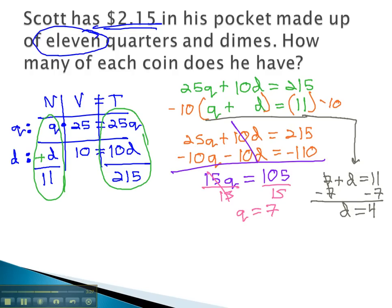We now have our solution. There are 7 quarters and 4 dimes. In part two of this video, we will look at a second example, which we use this exact same process to find our two equations from the first and last columns.